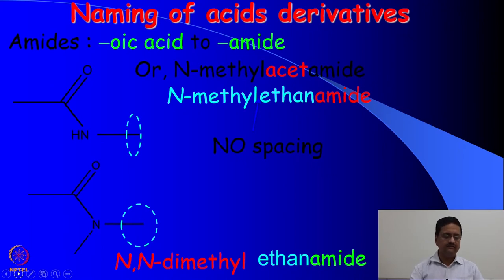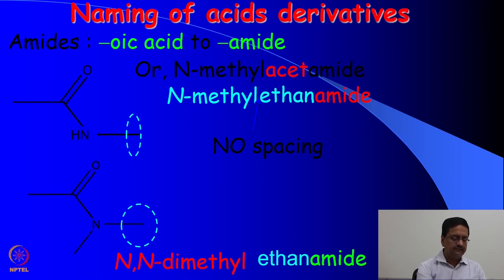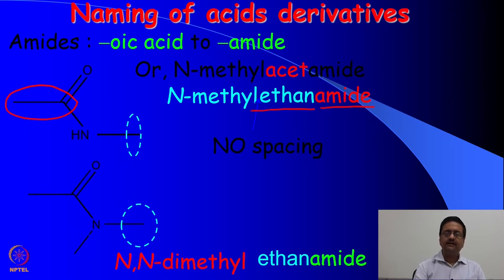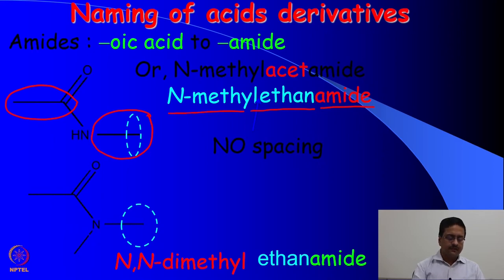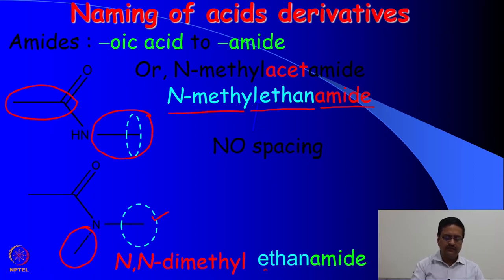The next type of acid derivative is the amide, which is also derived from benzoic acid or any organic acid. With 'oic acid' getting converted to amide, we write the name as 'amide.' In the first example, it is originated from ethanoic acid, so we write it as ethanamide. If there is an N-methyl group present, it is N-methyl ethanamide, and if there are two methyl groups, we write it as N,N-dimethyl ethanamide. This is how one names amides.